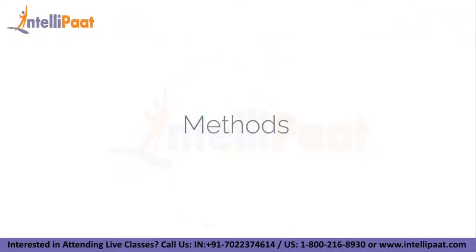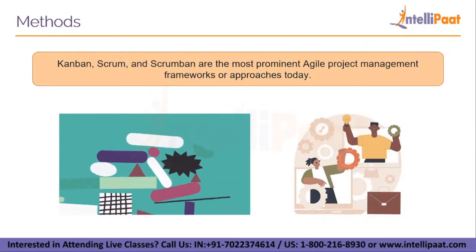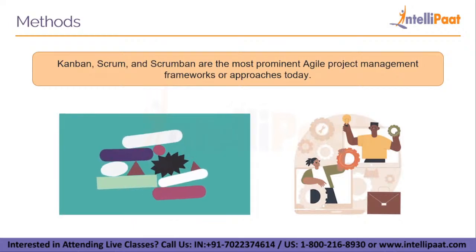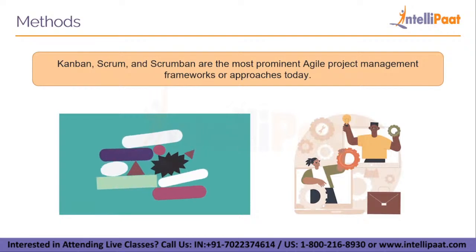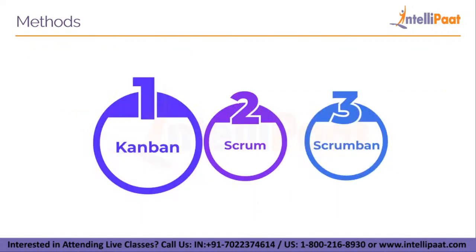Now let's move on to the methods involved. As Agile became a popular topic at the turn of the century, numerous frameworks rose to prominence, like Scrum. Many firms pursuing true business agility discovered that overly prescriptive frameworks and agility are diametrically opposed. Kanban, Scrum, and Scrumban are the most prominent Agile project management frameworks today. Kanban is a method developed over a decade ago that focuses on ongoing process improvement and evolutionary development. Its six key practices include visualizing work, limiting work in progress, managing flow, making process policies explicit, implementing feedback loops, and improving collaboratively.